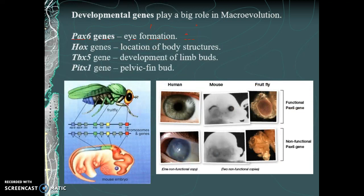A major advancement in support for evolution, especially macroevolution, is our growing understanding of genetics. Developmental genes play a big role in macroevolution. Key genes include PAX6, HOX, TBX5, and PITX1. These genes all control specific developmental features in all animals. Why do we all have the same genes that develop our eyes, locate body structures, limb buds, and pelvic fin buds — unless we were all related? Over hundreds of millions of years, evolution, natural selection, and gene flow caused organisms to move into specific ecological niches. That's another line of evidence supporting evolution.